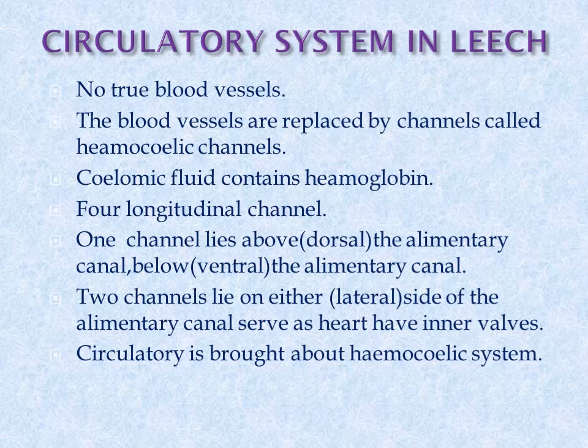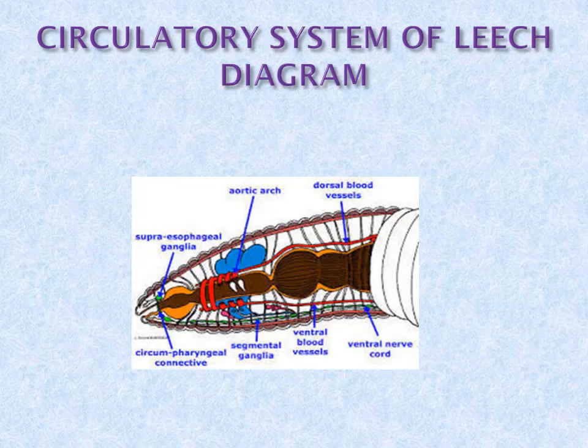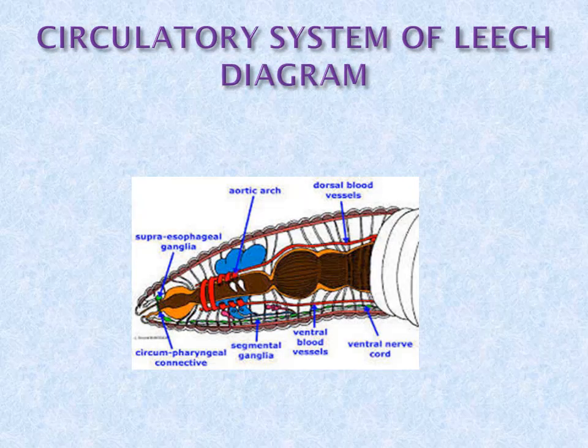The heart channels have inner valves. You can see the heart channels clearly in this picture. There is a dorsal blood vessel above and a ventral blood vessel below, connected by lateral blood vessels.